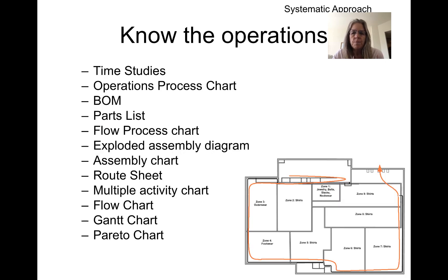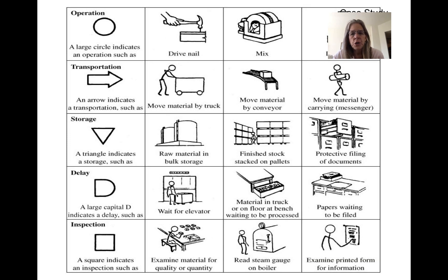I'm going to go through this whole list of charts and diagrams. Time studies is covered in a different video, but it's definitely one of the things that helps you understand the particular operation you're studying. An operations process chart is the first item, and these symbols are used in several different charts. There are five symbols: the circle indicates an operation where value is actually added in the processes taking up time and space. The next is transportation, which means something needs to be moved from one place to another — by a person, conveyor, or any other kind of material handling.